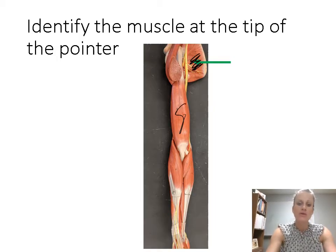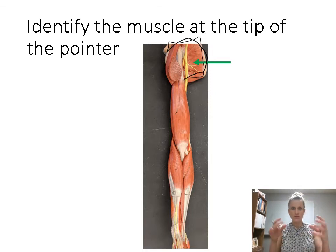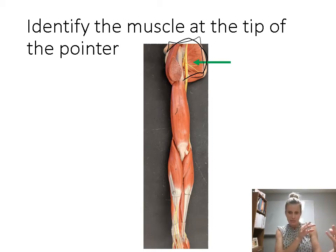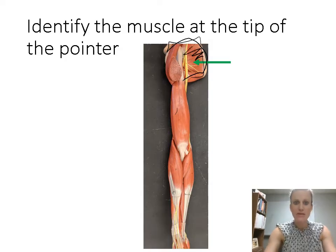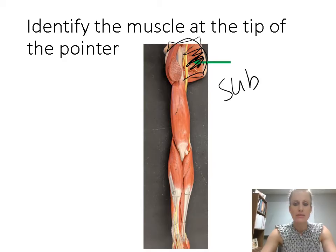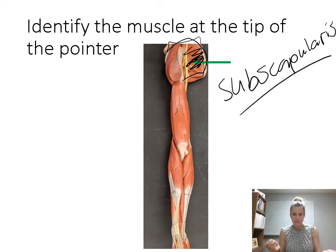Still looking at the arm — this is showing a muscle that sits underneath the scapula. A little while ago we looked at the muscles behind the scapula — the supraspinatus and infraspinatus, which are posterior to the scapula. This is looking deep to the scapula, underneath it. The muscle that sits underneath the scapula is called the subscapularis — literally meaning 'beneath the scapula.'